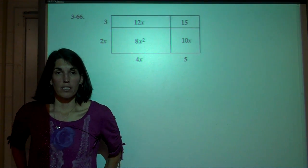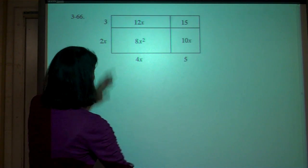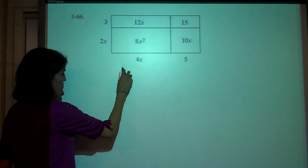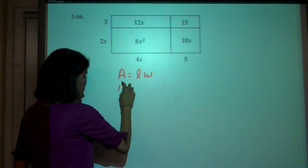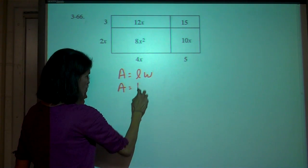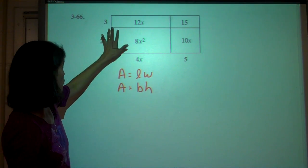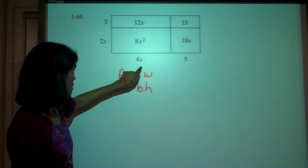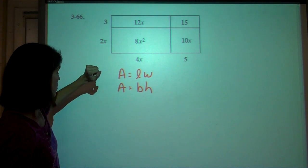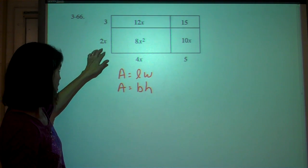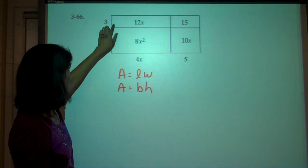What we're going to work on is called an area model. It's called an area model because the shape is a rectangle, and to find the area you do length times width, or base times height. So for this rectangle right here, the base is 4x and the height is 2x, and 2x times 4x is 8x squared.